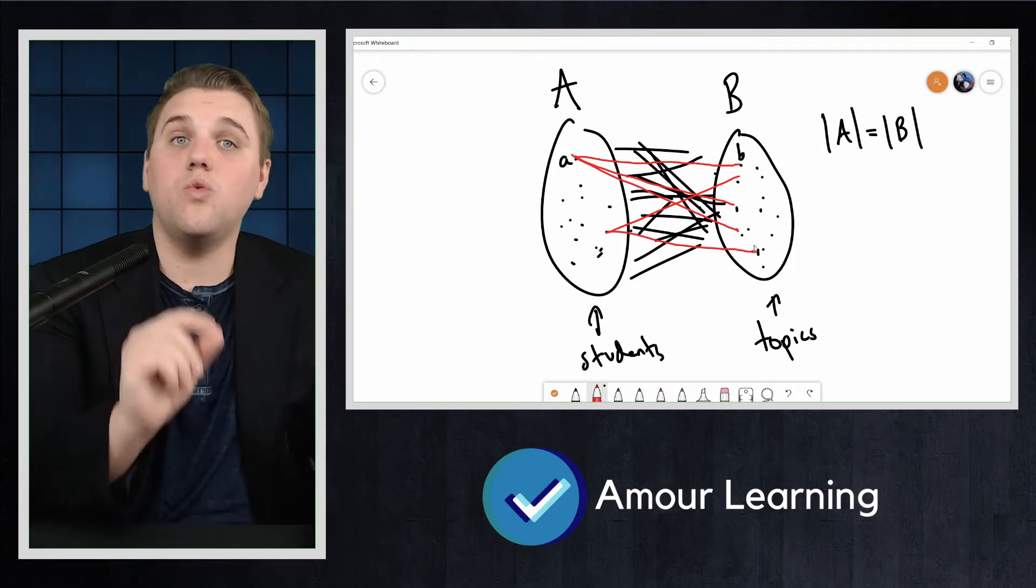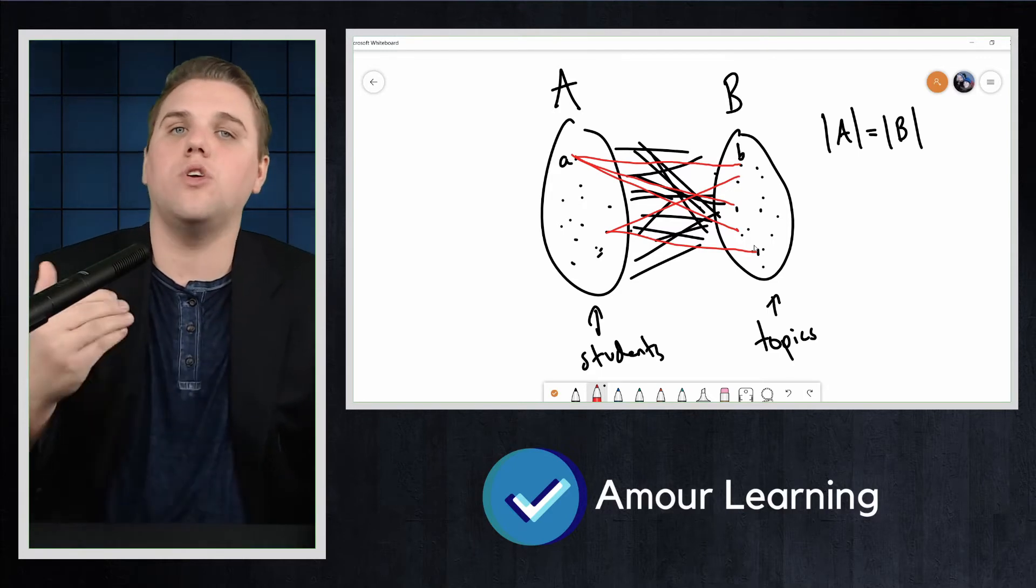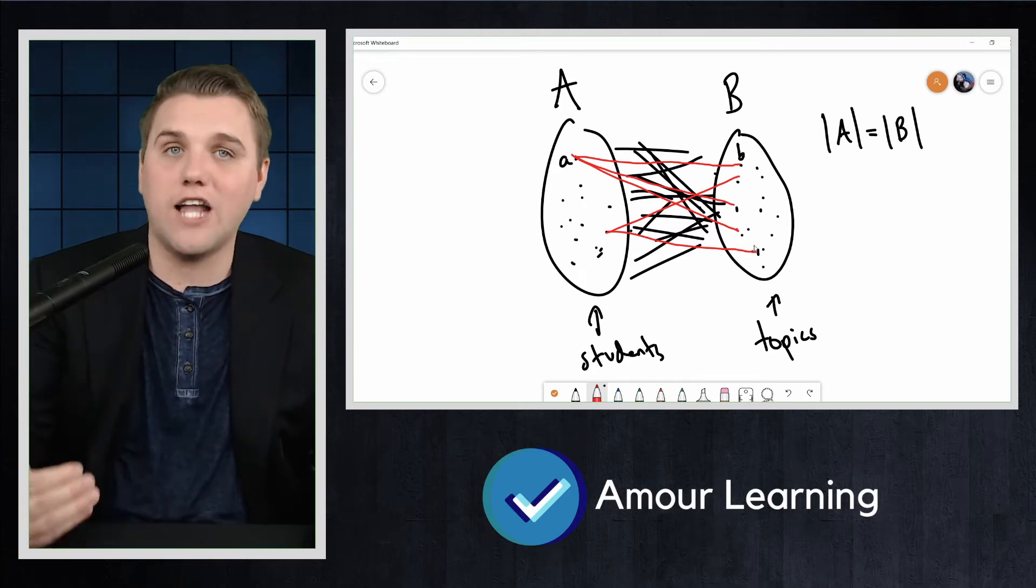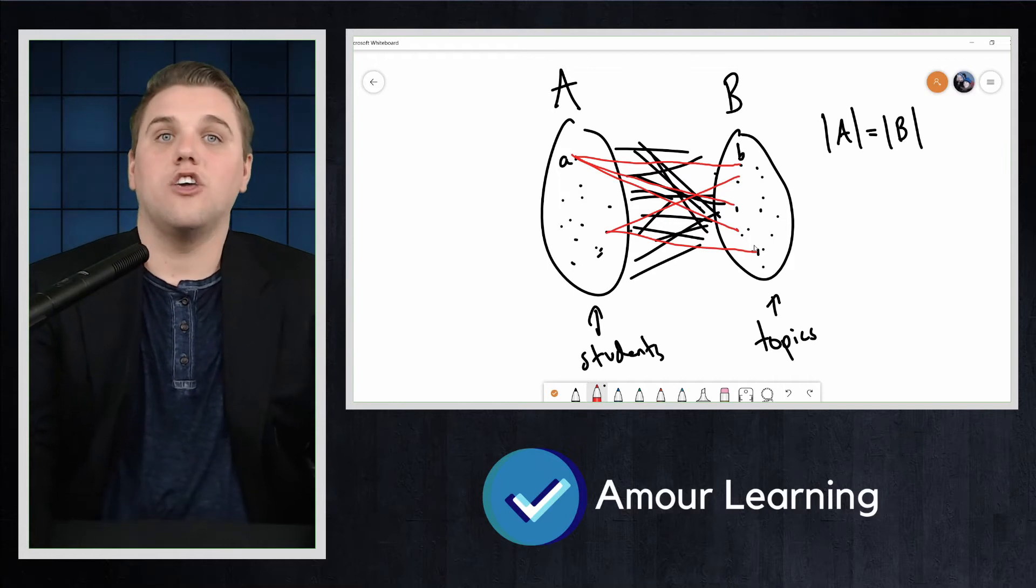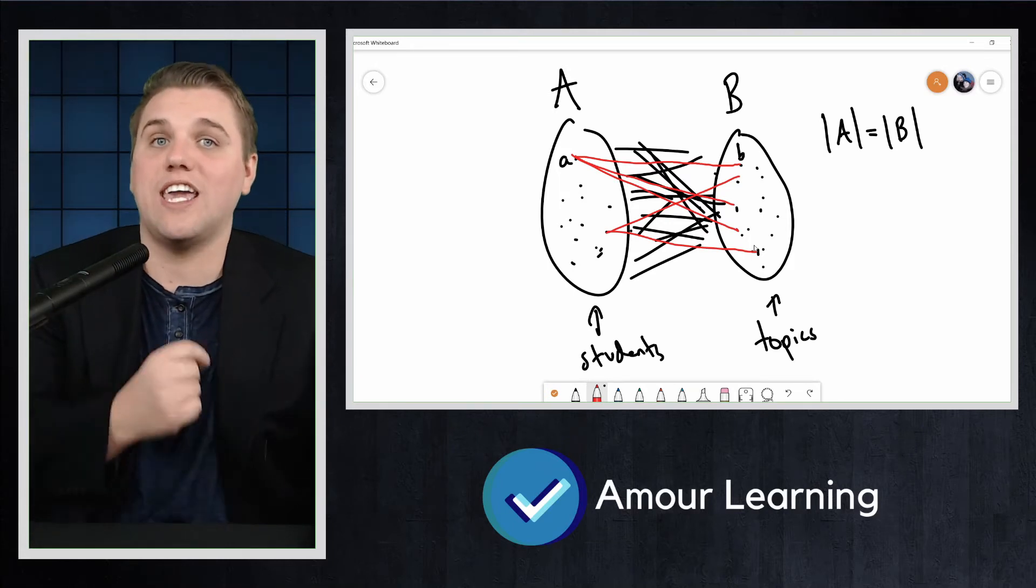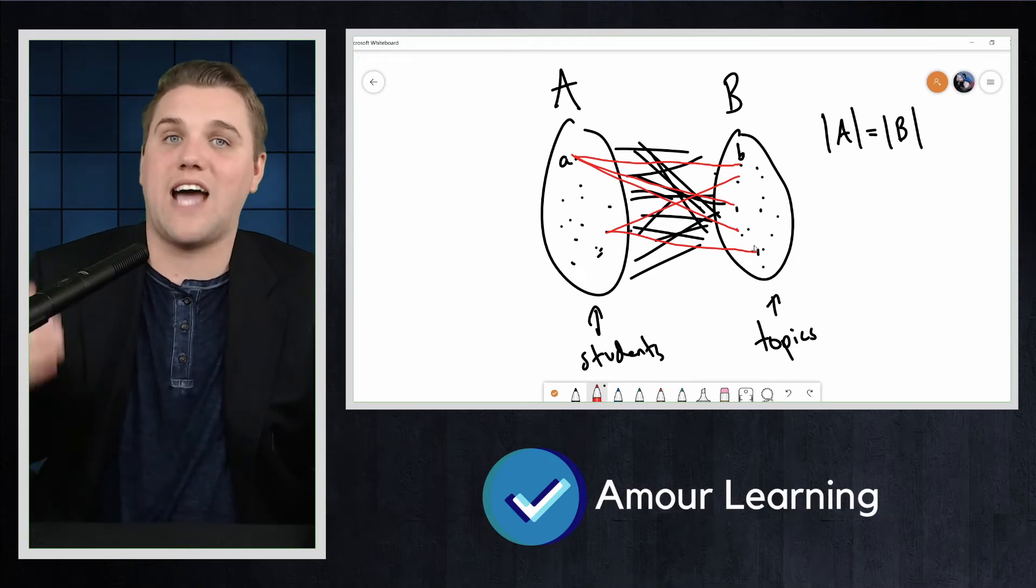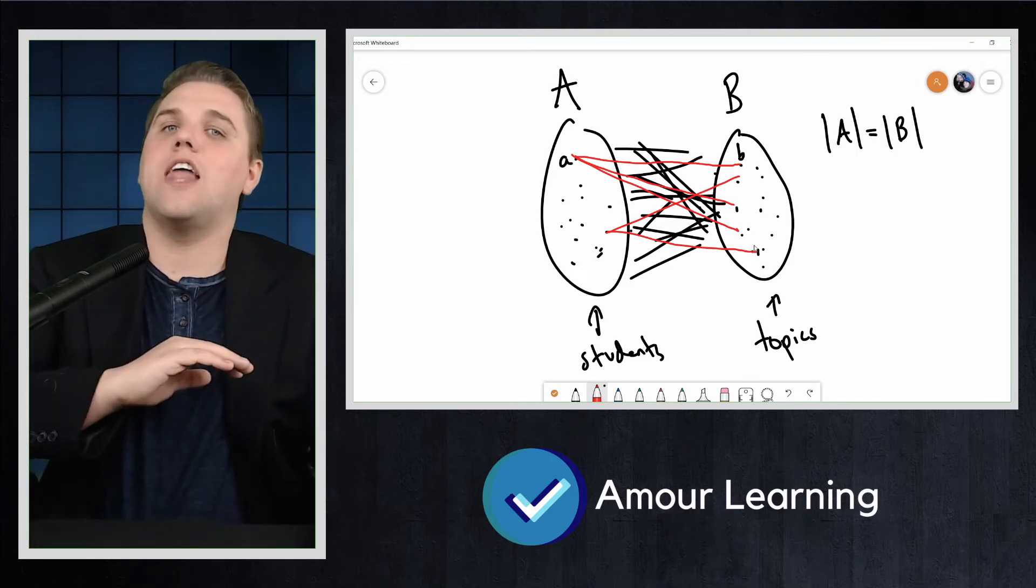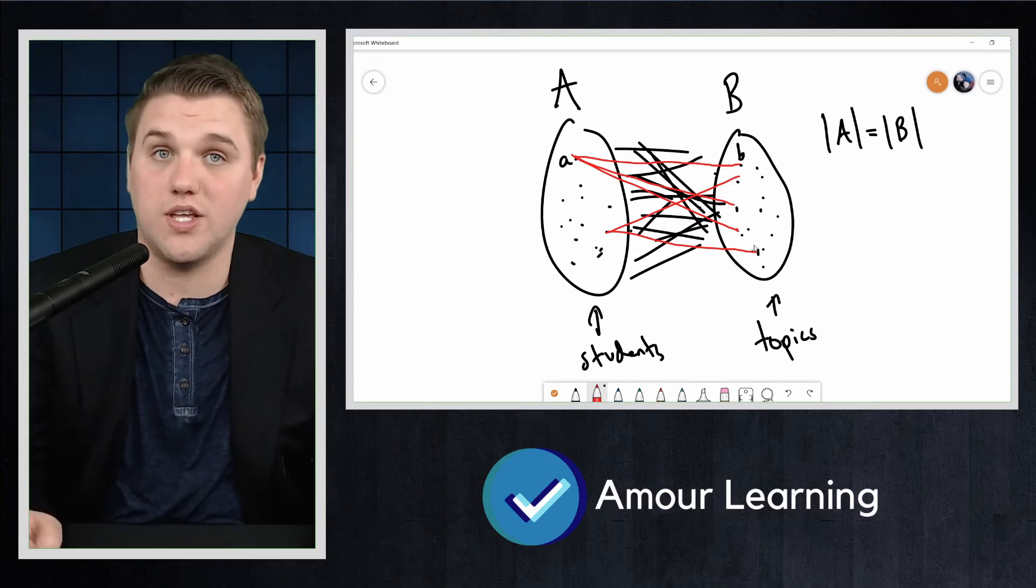As the teacher you want to assign each student their own unique topic. Thus you want to find a matching of A. You pick some subset of the edges here, some of these edges, so that each student gets matched up with exactly one topic and no topic gets matched on two students.